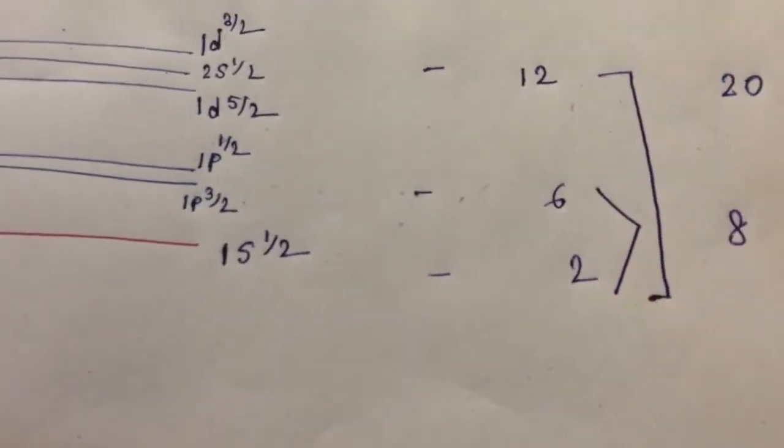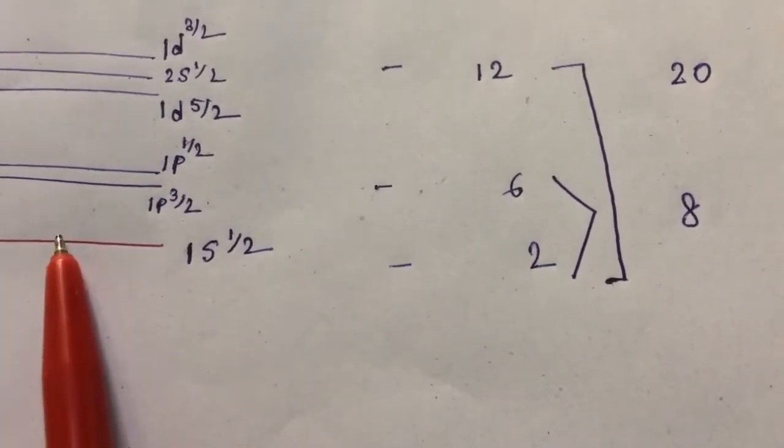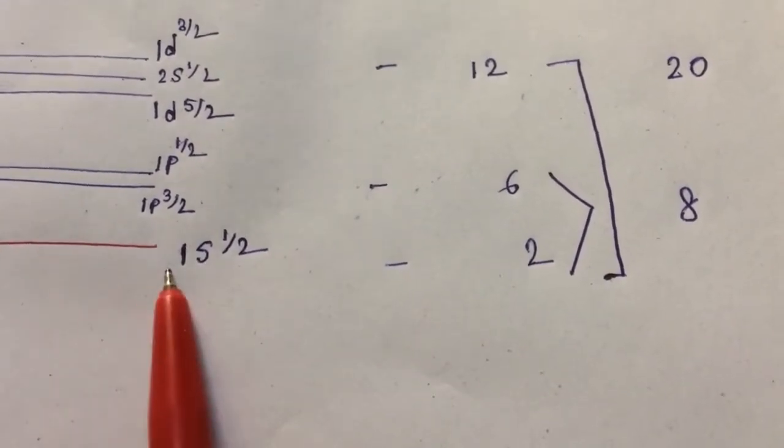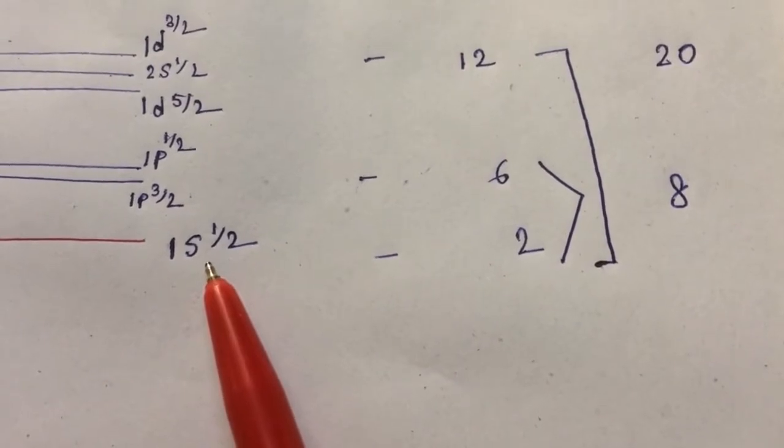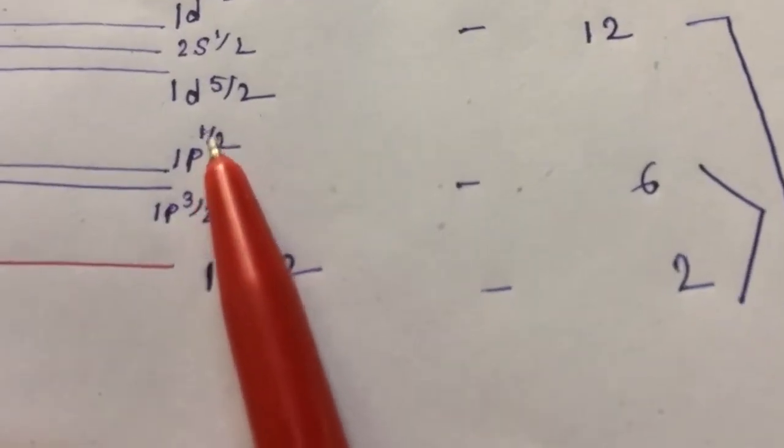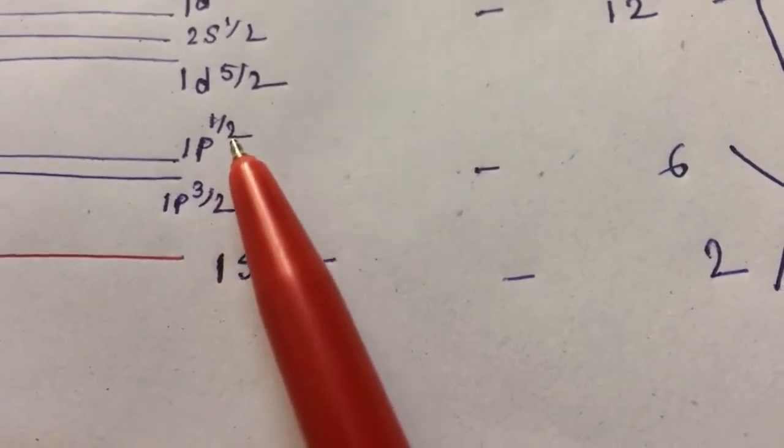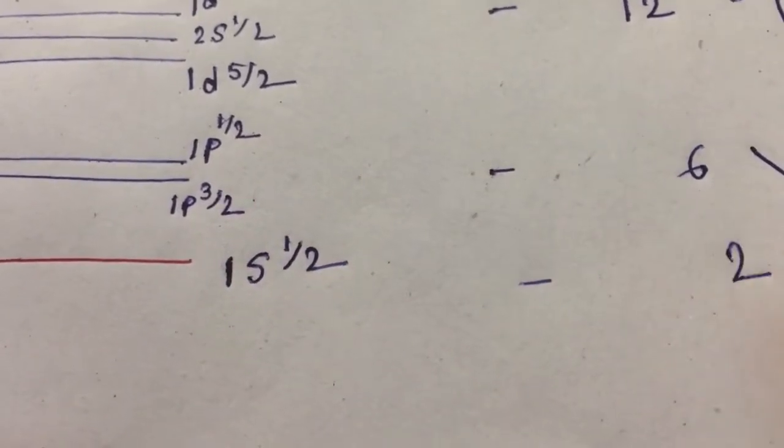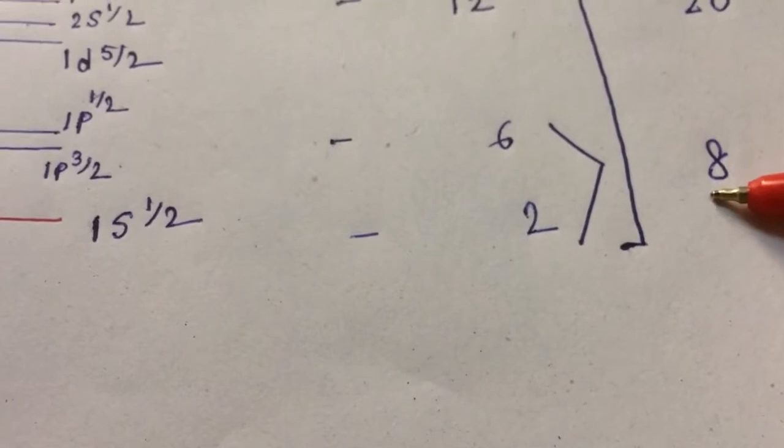Either neutrons or protons will reside in these states. For this state, the number of nucleons is 2. For this one, the number of nucleons is 4. For this one, the number of nucleons is 2 when it's 1p3/2. The J value is half, the number of nucleons is 2, so 4 plus 2 is equal to 6.